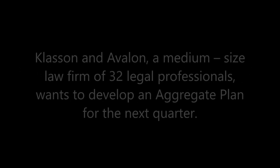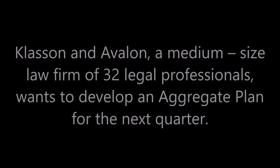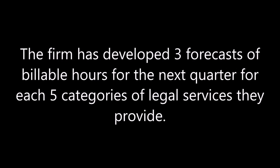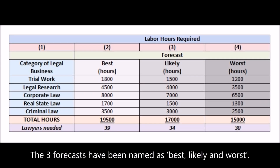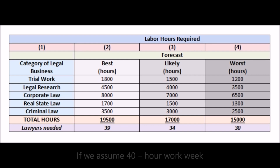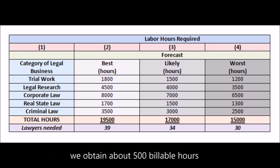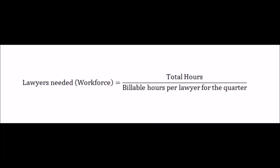Here's a brief example of aggregate planning in services. Claston and Avalon, a medium-sized law firm of 32 legal professionals, wants to develop an aggregate plan for the next quarter. The firm has developed three forecasts of billable hours for the next quarter for each of five categories of legal services they provide. The three forecasts have been named as Best, Likely, and Worst. Assuming a 40-hour workweek and that 100% of each lawyer's hours are billed, we obtain about 500 billable hours from each lawyer this fiscal quarter. Lawyers needed, or workforce, is equal to total hours divided by billable hours per lawyer for the quarter.